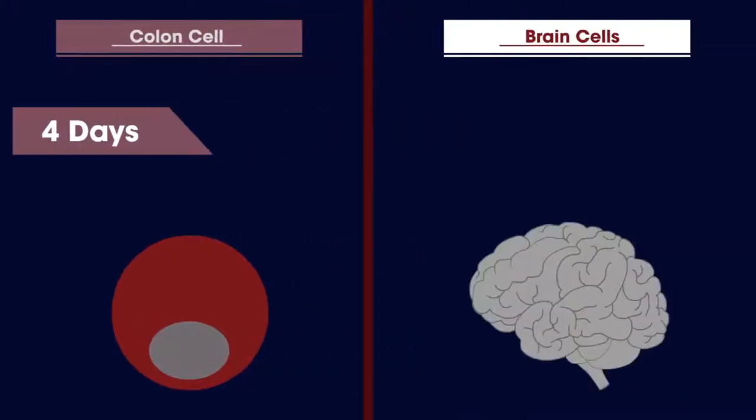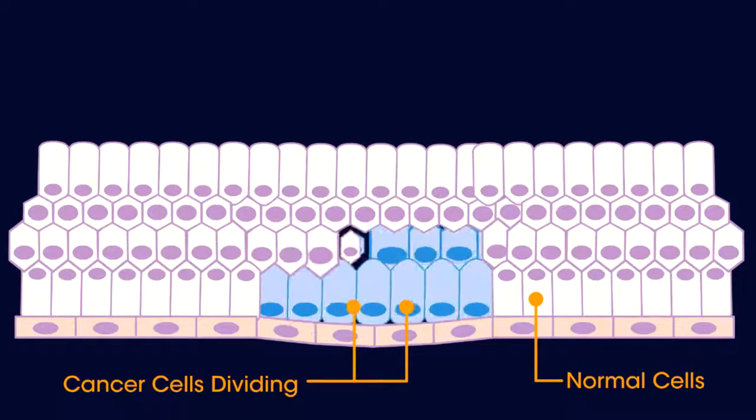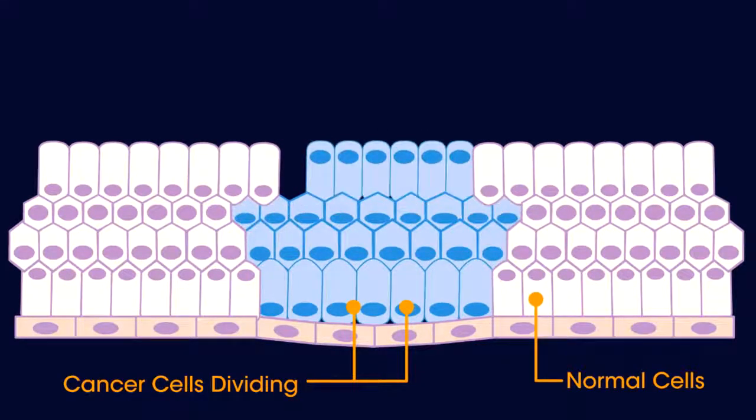Cancer can start when just one of the trillion cells begins to grow and multiply too much. The result is a mass of cells called a tumor. The starting place of abnormal cell growth and division is called the primary tumor. They can start almost anywhere in the body.